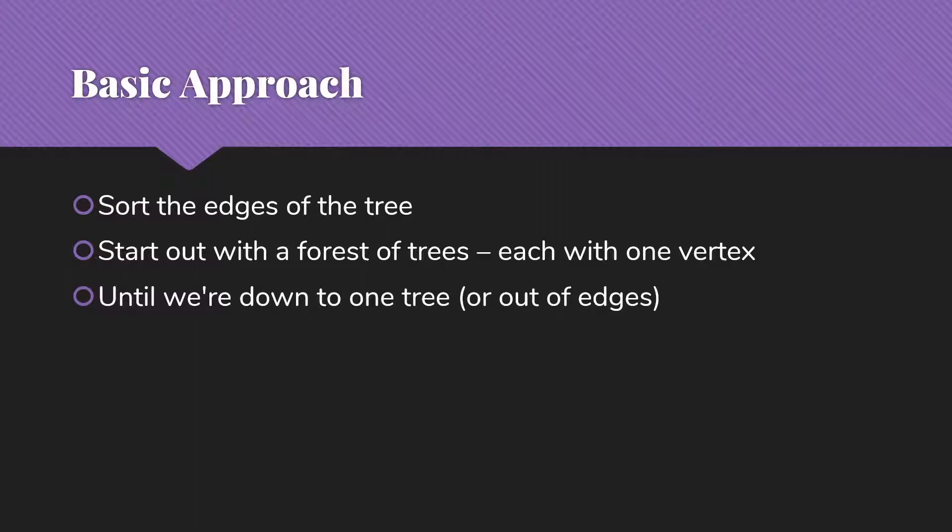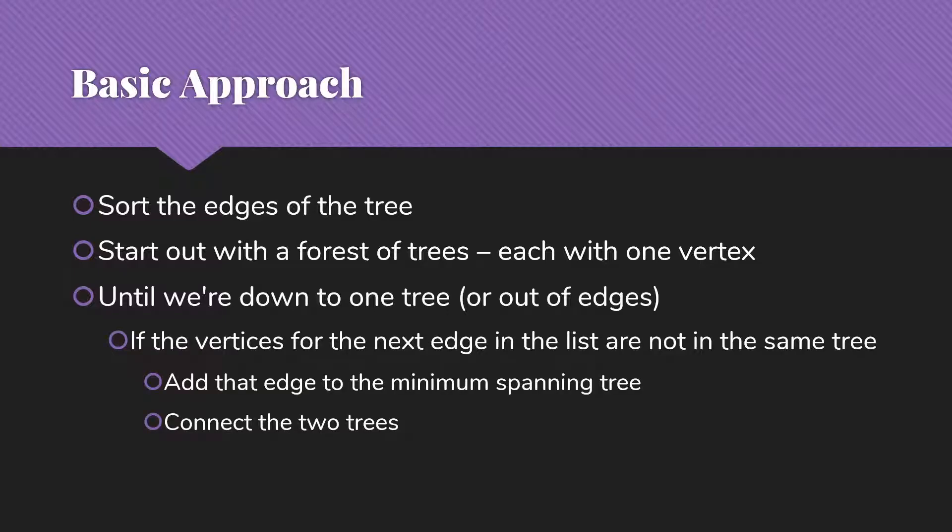Then, until we're down to just one tree or we run out of edges, if the vertices for the next edge in the list are not in the same tree—so the two vertices at the ends of the edge are in two different trees—we're going to add that edge to our minimum spanning tree and connect those two trees.